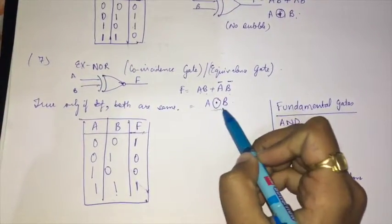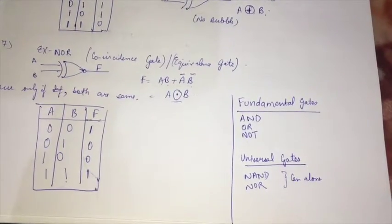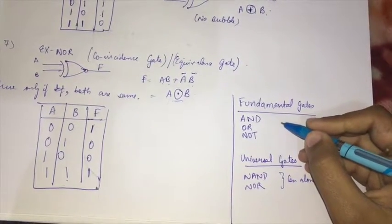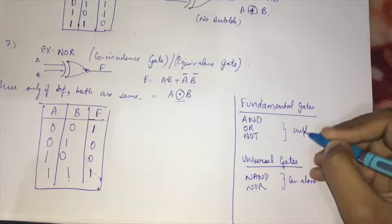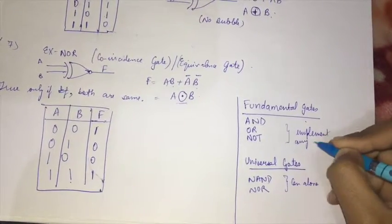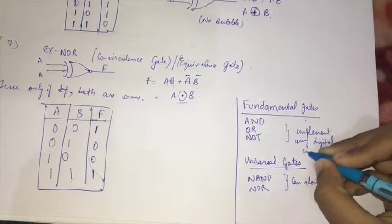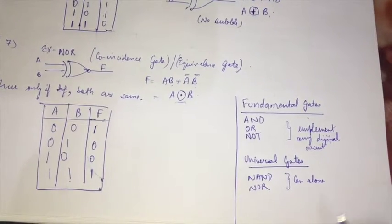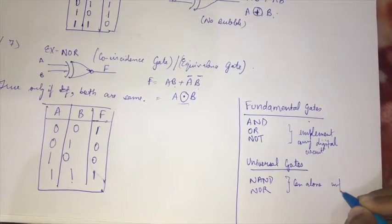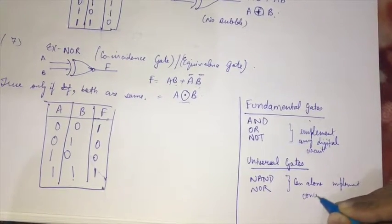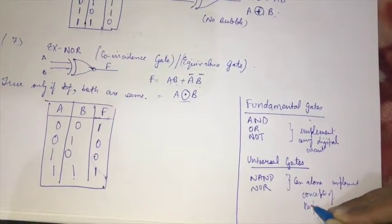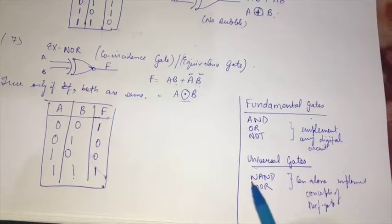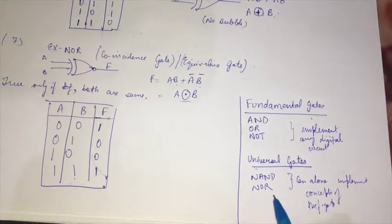AND, OR, and NOT gates are known as the fundamental gates because they can implement any digital circuit. The universal gates are the NAND gate and the NOR gate, because they can alone implement the concepts of the fundamental gates—we can construct all other gates using a NAND gate alone or a NOR gate alone.